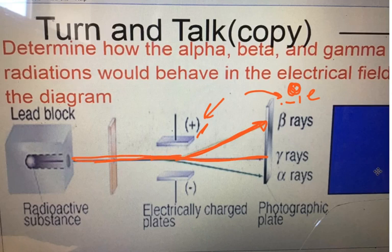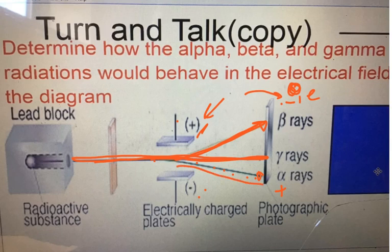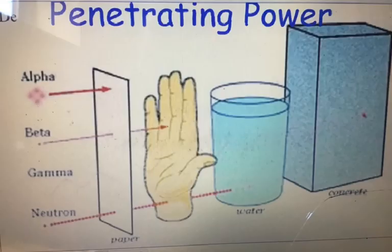Gamma rays have zero charge and very high energy, so they go straight through and are not affected by either the negative or positive plate. Alpha particles are helium atoms without electrons, so they're positive and will be attracted towards the negative plate. That's a typical exam question where they ask which particle would behave a certain way in an electrical field.